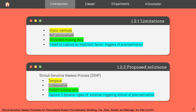As a solution to these limitations, in this work we propose our Stimuli-Sensitive Hox Processes model that is temporal, models data collaboratively, and can predict missing data. Most importantly, it captures three important dynamic types of external triggering stimuli of procrastination.